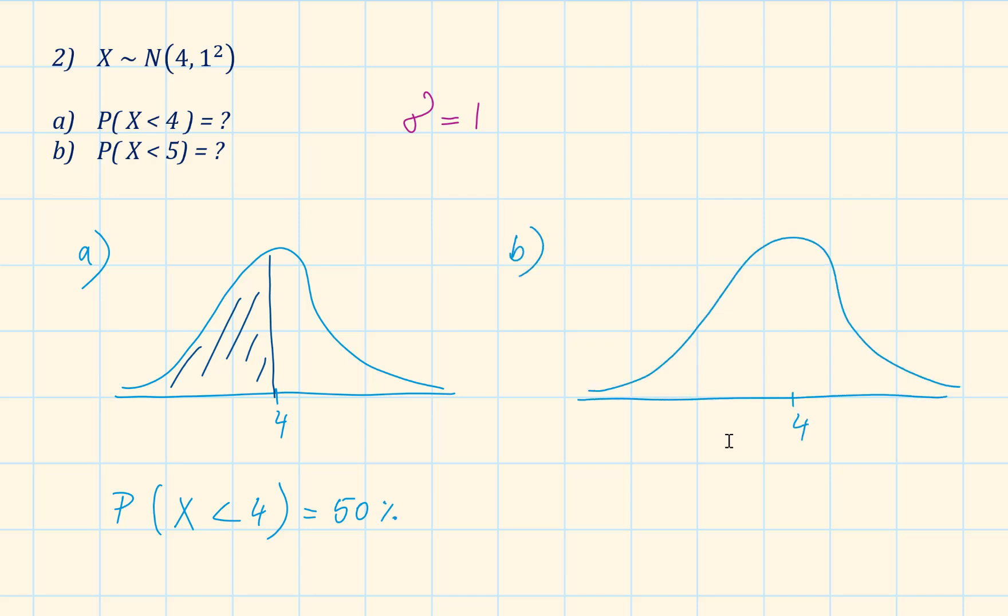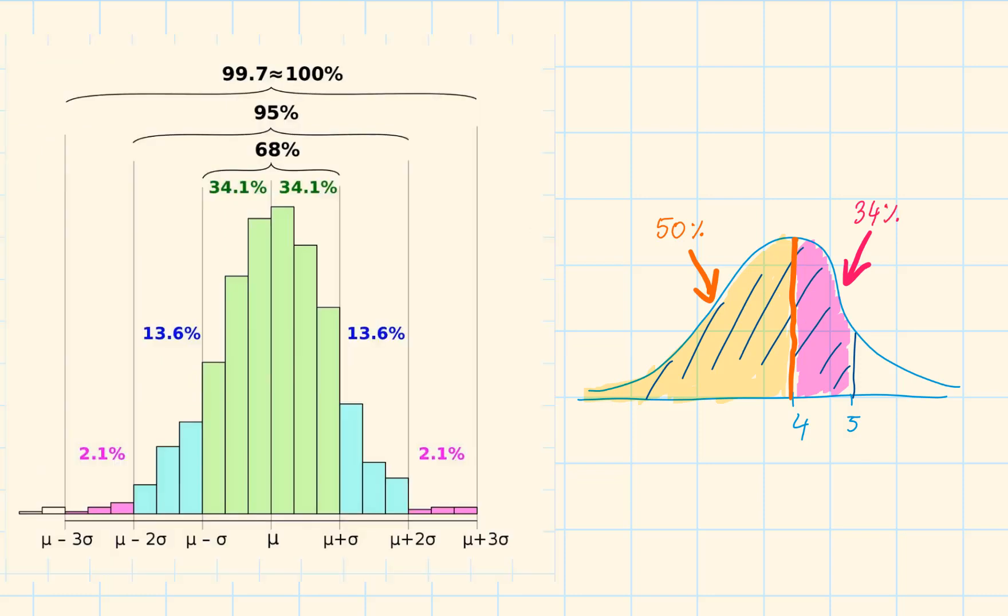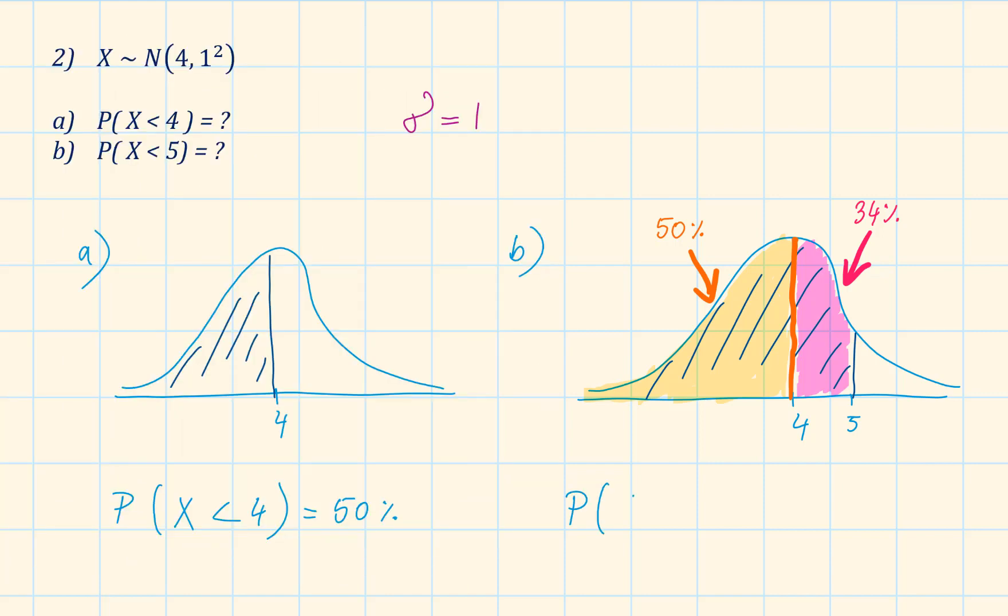Part b, find the probability that x is less than 5. We already know that less than 4 represents 50%. The standard deviation is 1. 4 plus 1 standard deviation is 5. Therefore, this pink area represents 34% from the 68, 95, 99.7 rule. So the probability of x being less than 5 is equal to 50% plus 34%, which equals 84%.